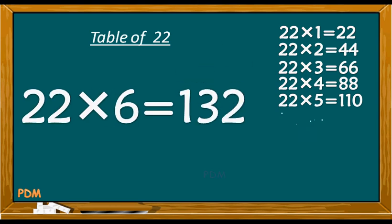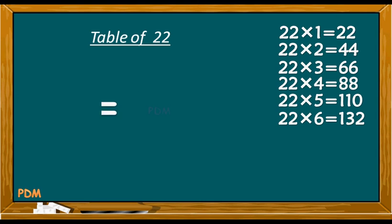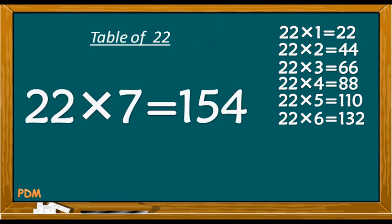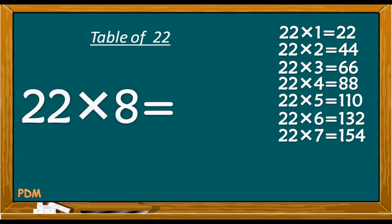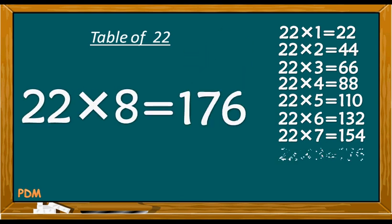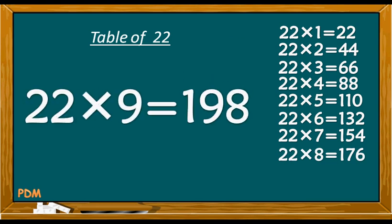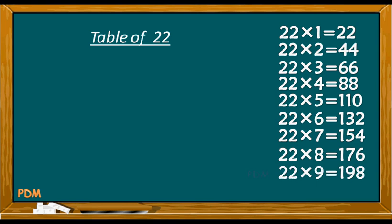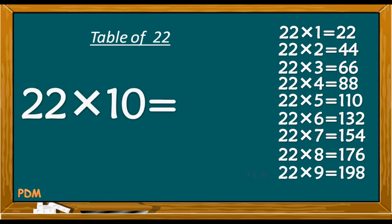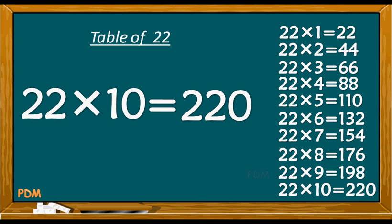22 6's are 132. 22 7's are 154. 22 8's are 176. 22 9's are 198. 22 10's are 220.